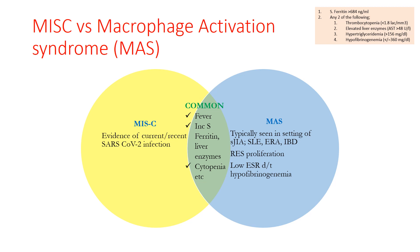MAS is typically seen in the setting of systemic-onset juvenile idiopathic arthritis (JIA), and also in SLE, enthesitis-related arthritis, and inflammatory bowel disease. There will be evidence of reticuloendothelial system proliferation — hepatosplenomegaly and lymphadenopathy — which is usually not seen in MIS-C. Low ESR is again a very prominent differentiating feature between MIS-C and MAS, occurring because of hypofibrinogenemia, which is seen in both MAS and HLH.